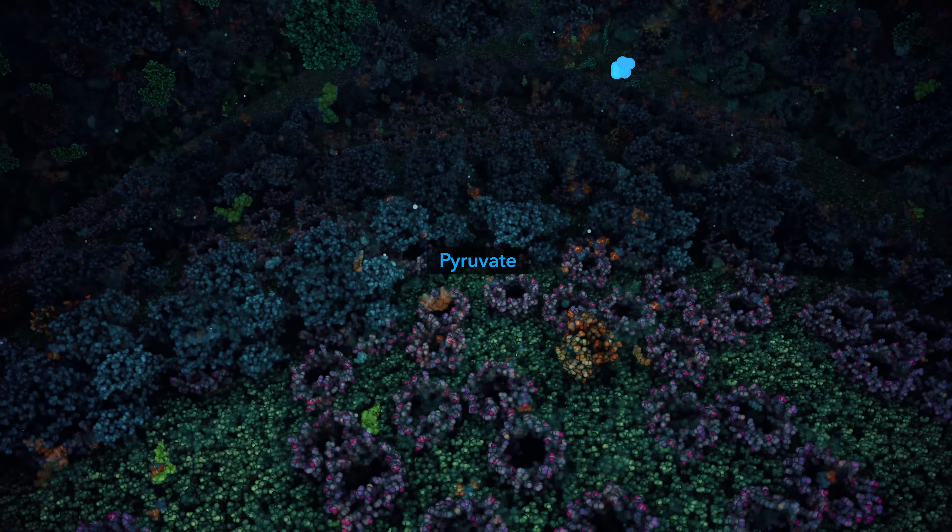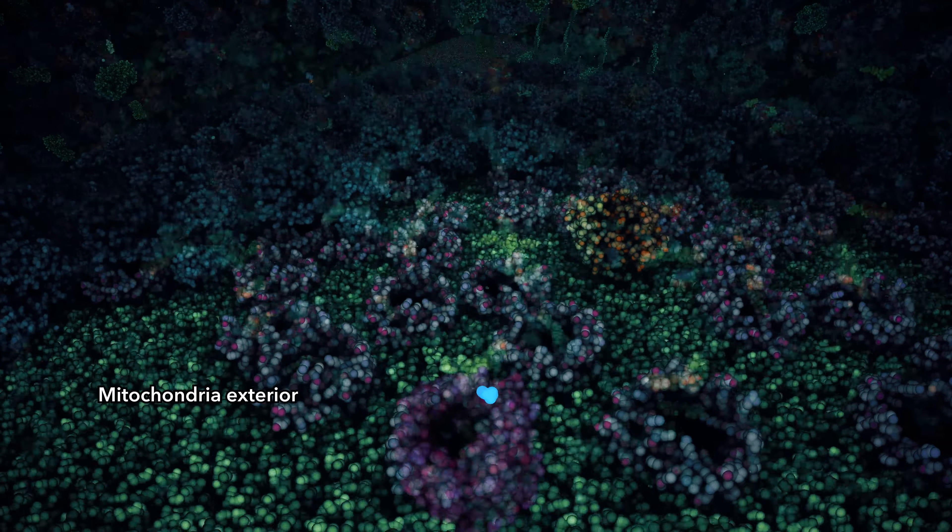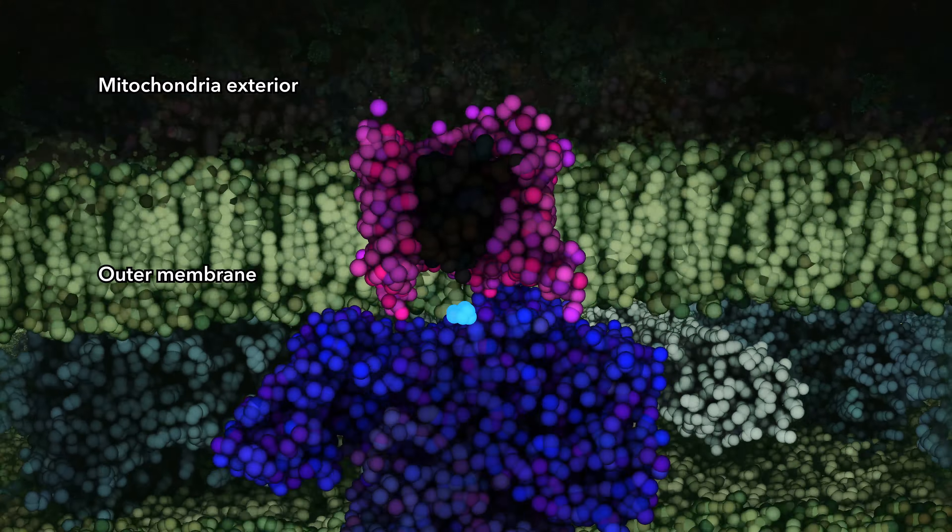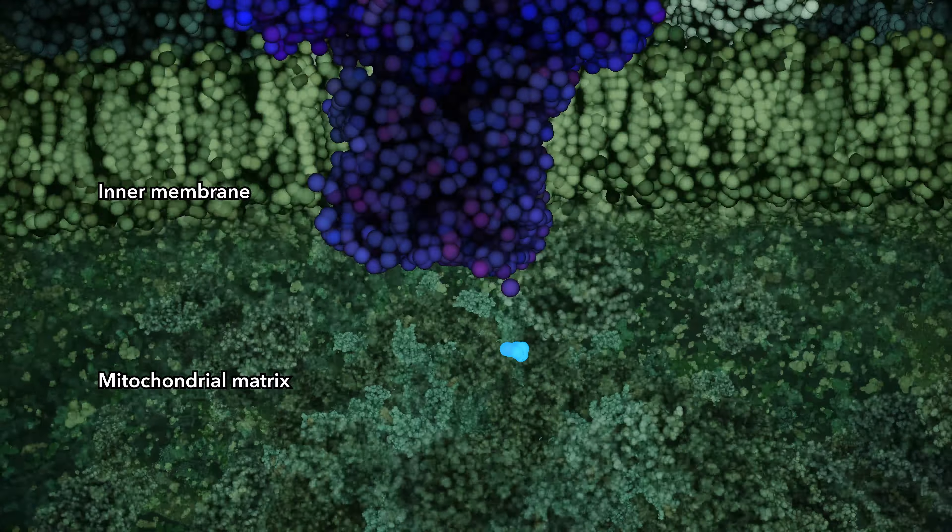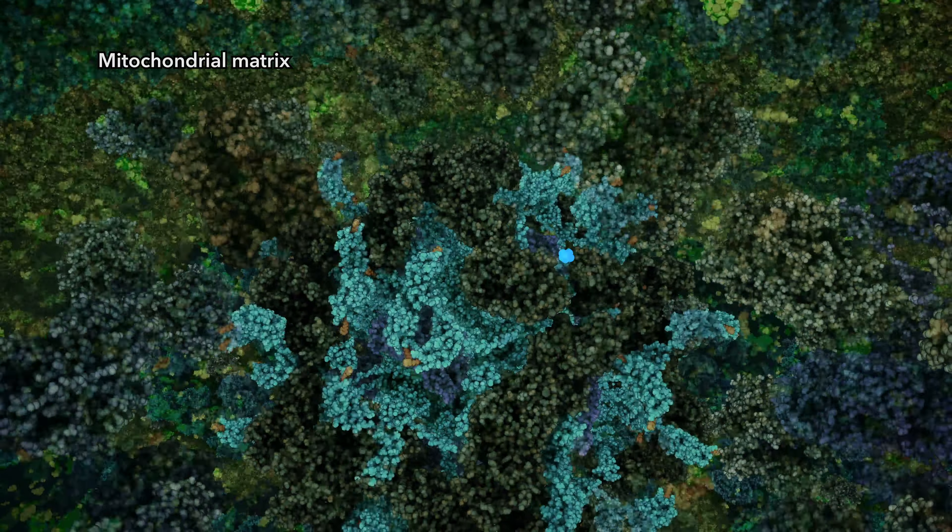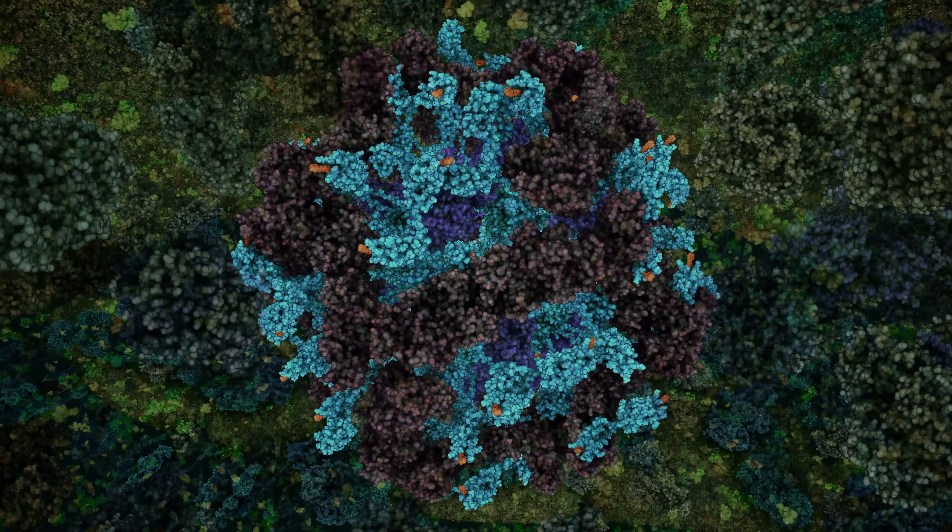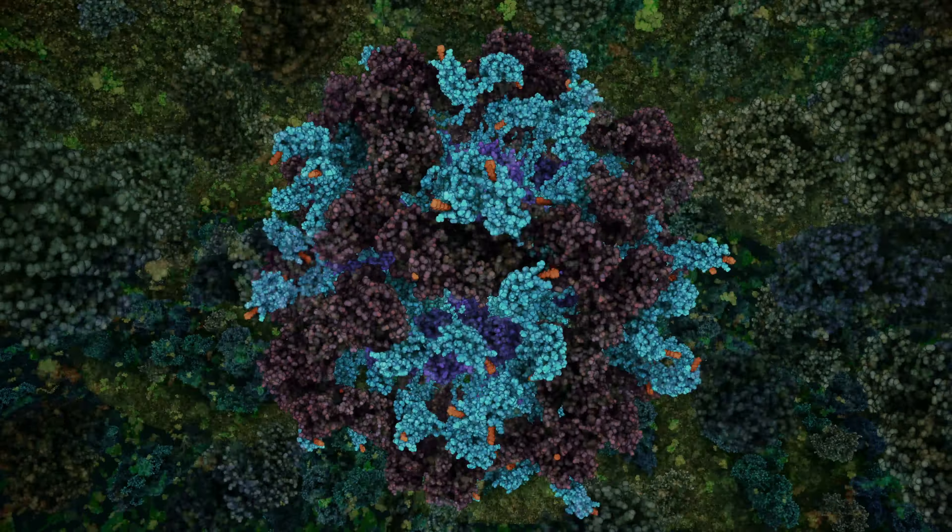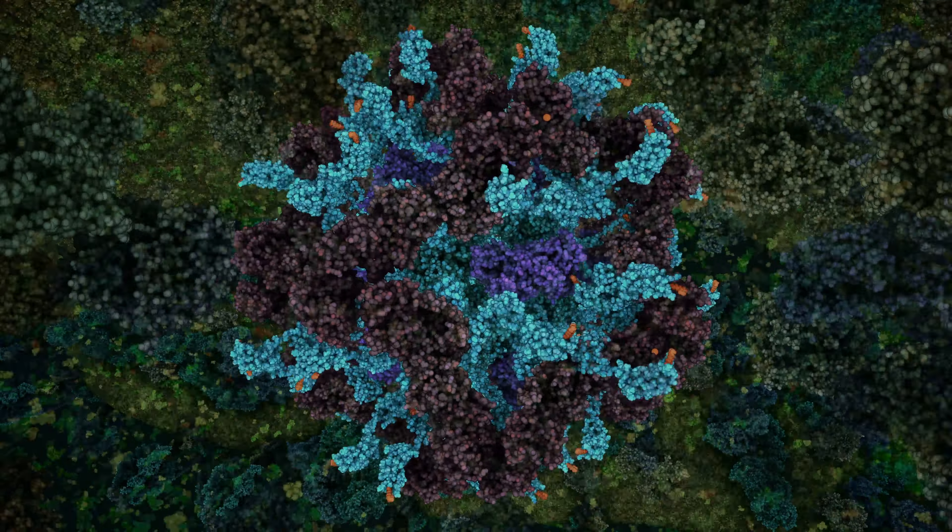The product of glycolysis, pyruvate, enters the mitochondria through the same pore that ATP uses to exit, then is transported into the interior. The gateway to mitochondrial respiration is a huge multi-enzyme complex that links pyruvate to aerobic respiration, yielding 15 times more ATP than created by glycolysis alone.